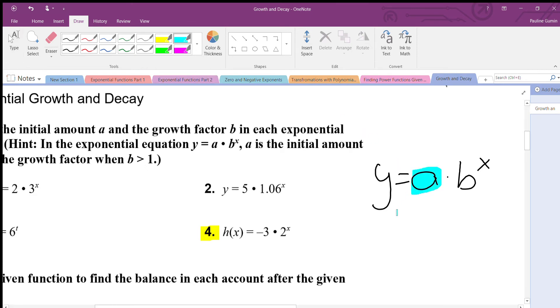We have our a. A represents your initial amount, which means your beginning, so what you start off with. If you don't see an a there, if it's just b to the x, we imply that there's actually that invisible one.